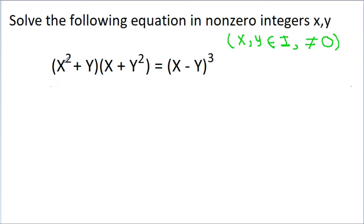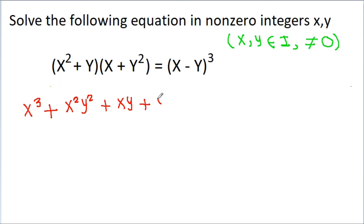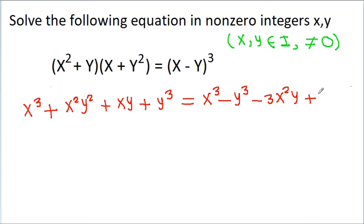If we multiply x squared plus y and x plus y squared, then we get x cubed minus x squared y, and x squared times y squared will be x squared y squared, minus x times y minus y times y squared will be y cubed, equal to x minus y whole cube, which expands to x cubed minus y cubed minus 3x squared y plus 3xy squared. Now x cubed and x cubed will get cancelled.